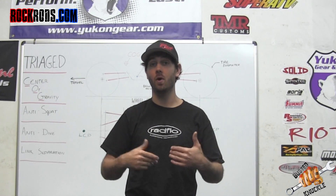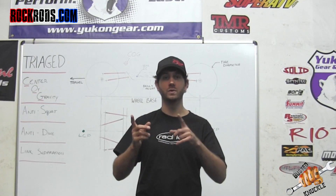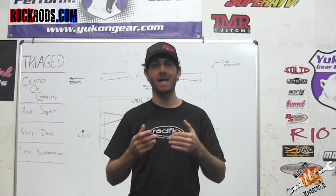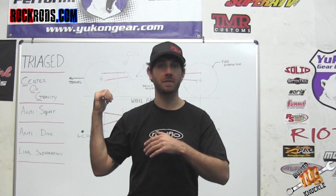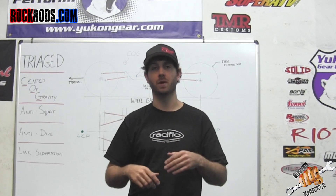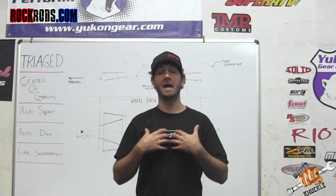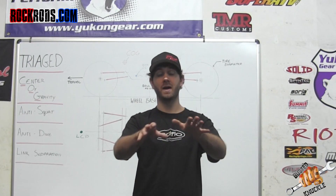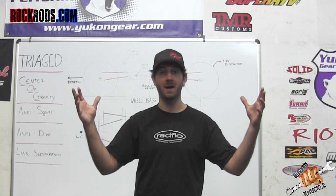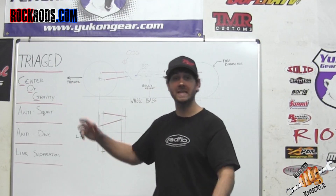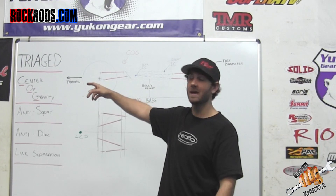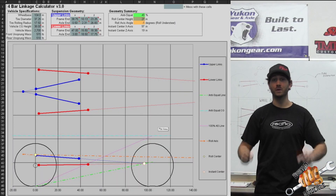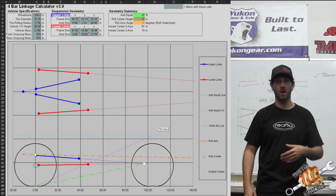If you want to know how to do it the long way, do a Google search or go on YouTube and type in how to calculate anti-squat. There's a guy with a YouTube channel called Engineering Explained who teaches you how to do that. I'm here to teach you the easy way. There's a calculator called TRIAGED — a guy has developed an Excel spreadsheet. All you have to do is plug your numbers in and it will spit out your anti-squat value.